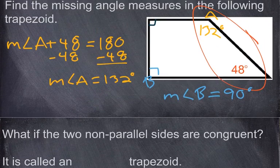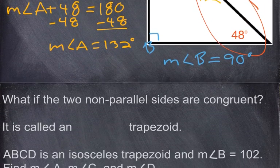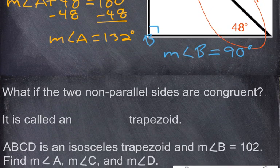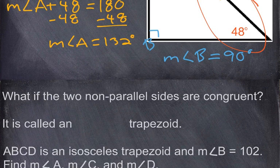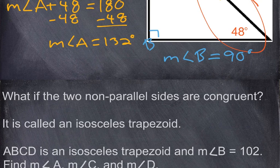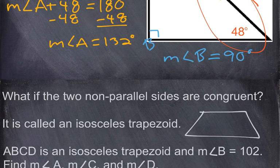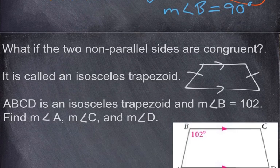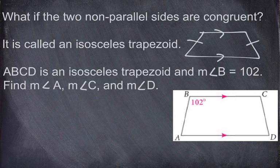What if the two non-parallel sides are congruent — what if the two legs are congruent? Then we call that an isosceles trapezoid. If the two legs are congruent, the trapezoid is isosceles. Here, ABCD is an isosceles trapezoid and the measurement of angle B is equal to 102 degrees. That's all we're given, and we need to find all four angles.